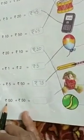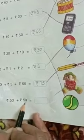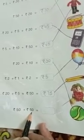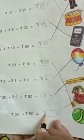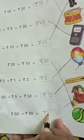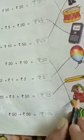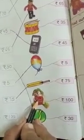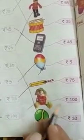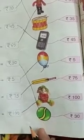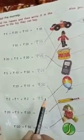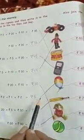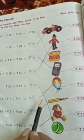Now next — rupees 50 plus rupees 50. 50 plus 50 is 100 rupees. And the cost of this toy is 100, so we will match it with this toy. Now you will do this page in your math book properly and you will revise the same page in your rough notebook also. Thank you.